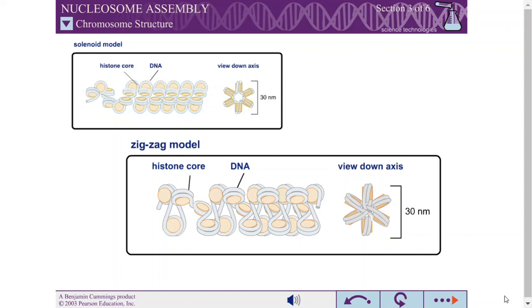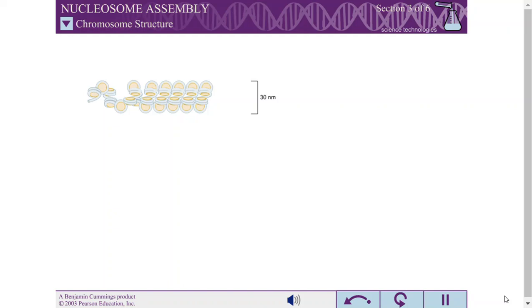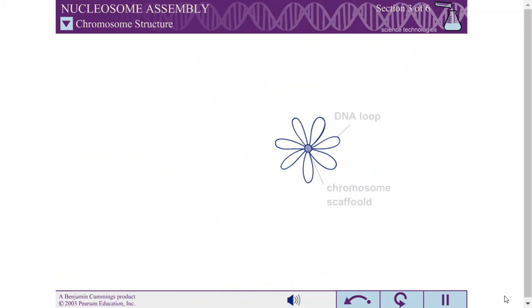To produce a highly condensed mitotic chromosome, the 30 nanometer fiber must be compacted into yet higher order structures. The 30 nanometer fiber is believed to fold into large loops, held together by nuclear scaffold proteins at the base of each loop. The looped fiber can then be coiled again to produce the fully condensed chromosome.